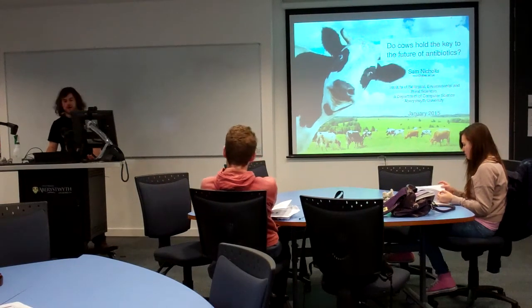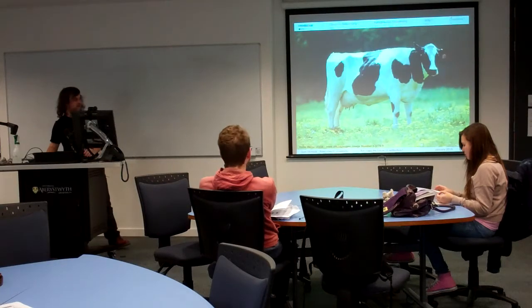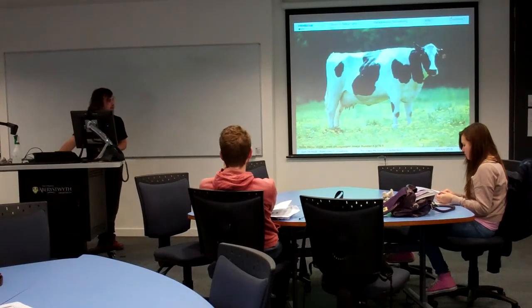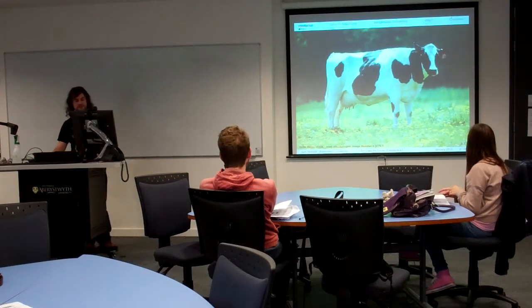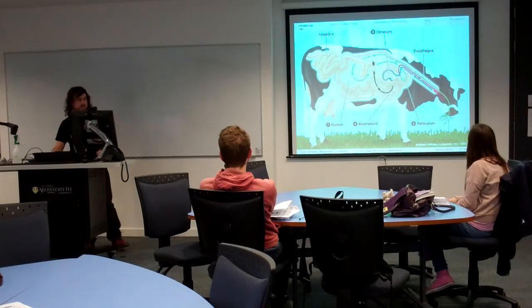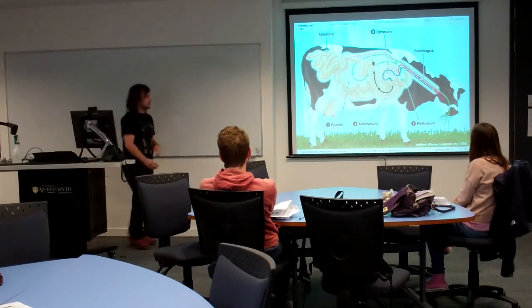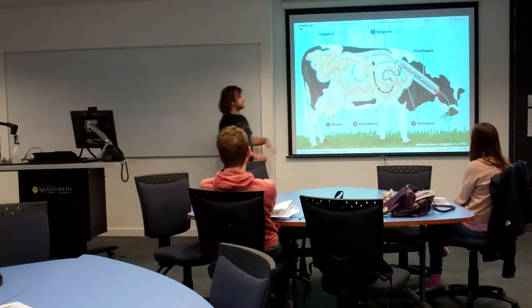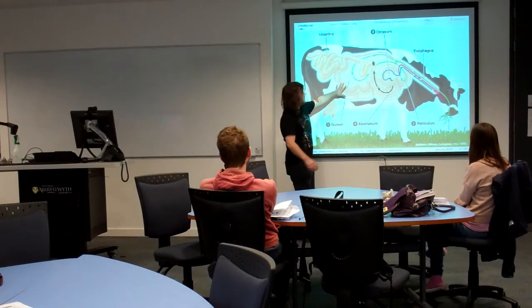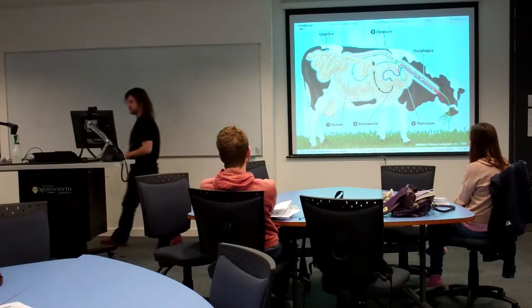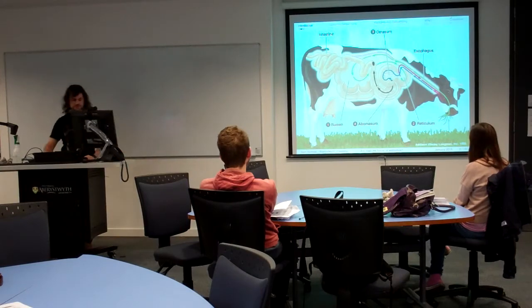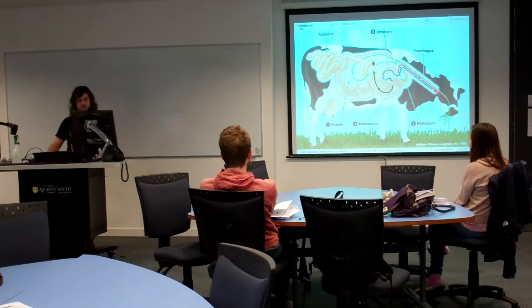For those of you who are unfamiliar, this is a cow, and if you take a cross-section of its digestive system it looks a little bit like this. My area of interest is here — the rumen, the first and largest of the cow's four stomachs, and it's the first stop full of food that the cow swallows.